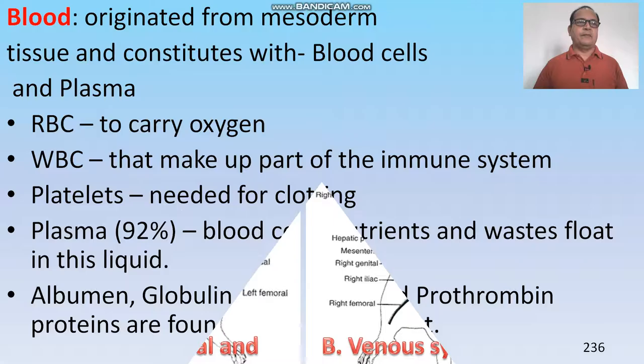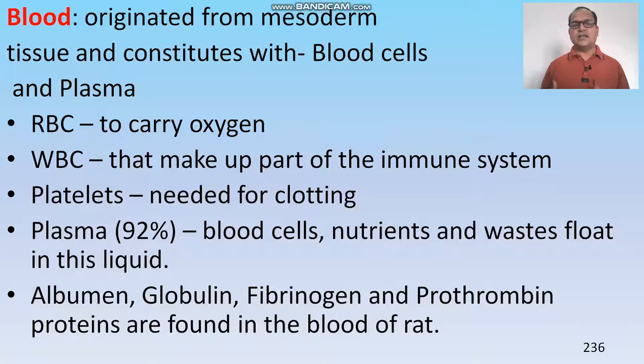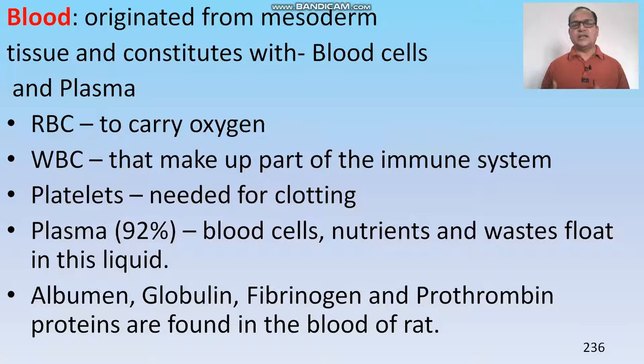Blood is originated from the mesoderm — it is mesodermal tissue — and constitutes blood cells and plasma. Red blood cells (RBCs) carry oxygen. White blood cells (WBCs) form part of the immune system. Platelets are needed for the clotting of blood. Plasma is 92% water, and blood cells, nutrients, and waste float in it. Albumin, globulin, fibrinogen, prothrombin, and other proteins are found in the blood of the rat. This concludes the discussion on the rat's digestive, circulatory, and respiratory systems. Thank you.